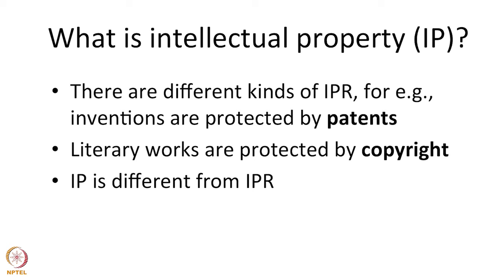Intellectual property specifically refers to things that emanate from human creative labor. Intellectual property manifests itself in various forms. For instance, an invention is an intellectual property which can be protected by a patent, which is an intellectual property right. A literary work — a book or work expressed in words — could be an intellectual property which can be protected by the intellectual property right known as copyright. So there is a distinction between intellectual property itself and the rights that protect these manifestations.